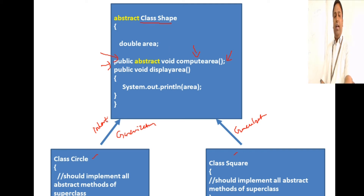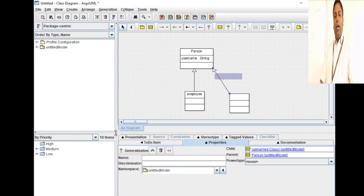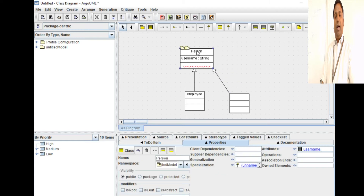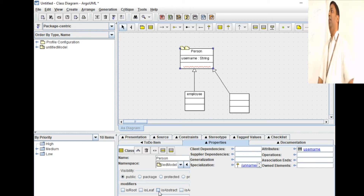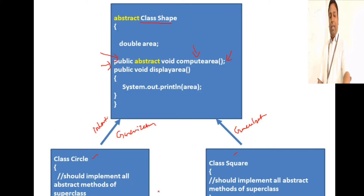This also contains the UML notation. How can you define whether a class is an abstract class? In ArgoUML, if you select a particular class, there is an option to say 'is abstract.' When you set that to 'is abstract,' it means that it is an abstract class with abstract methods.